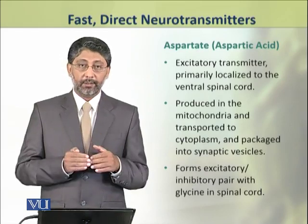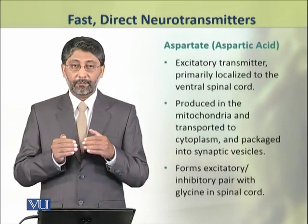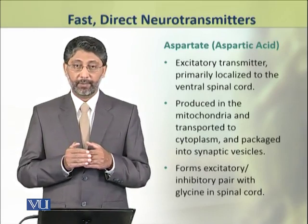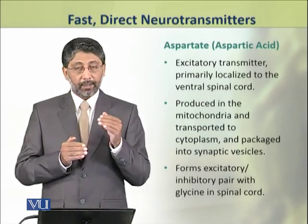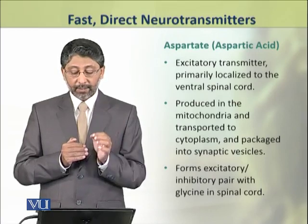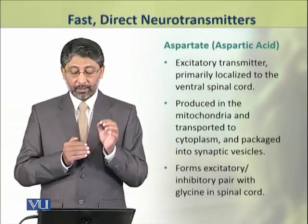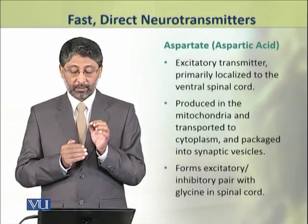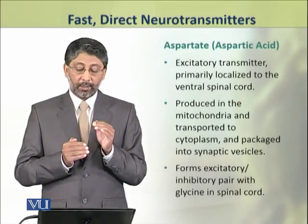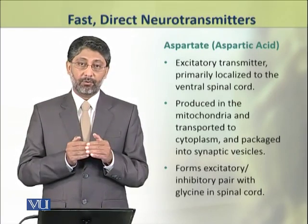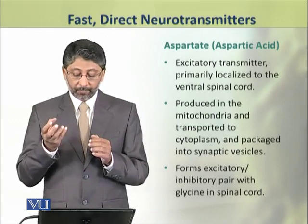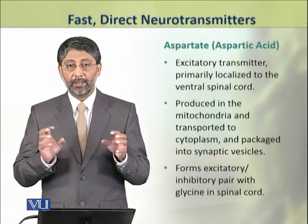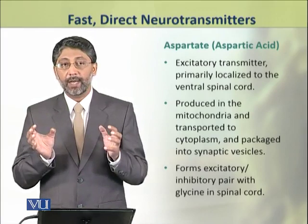The third most common fast directly acting neurotransmitter is aspartate. It acts as an excitatory transmitter in the ventral nerve cord. It is produced in the mitochondria, from where it is transported to the cytoplasm of the neuron and then packaged into synaptic vesicles.